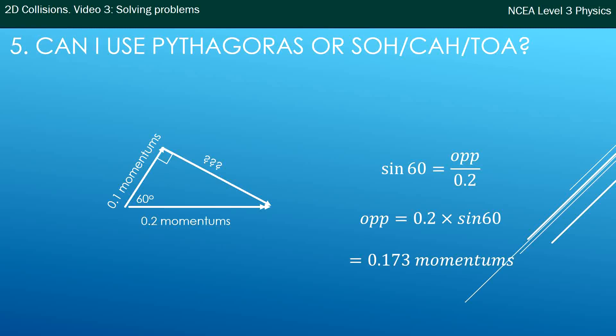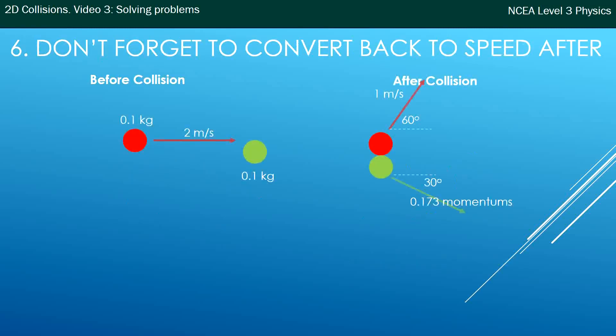Now if this was an NCEA question, they're not going to—well they may ask you—but the chances are very slim that they just ask you what the final momentum is. The chances are they'd say what's the final speed of the ball. So from that 0.173 momentums that I've added in there, we can turn that back into a velocity using the momentum equation.